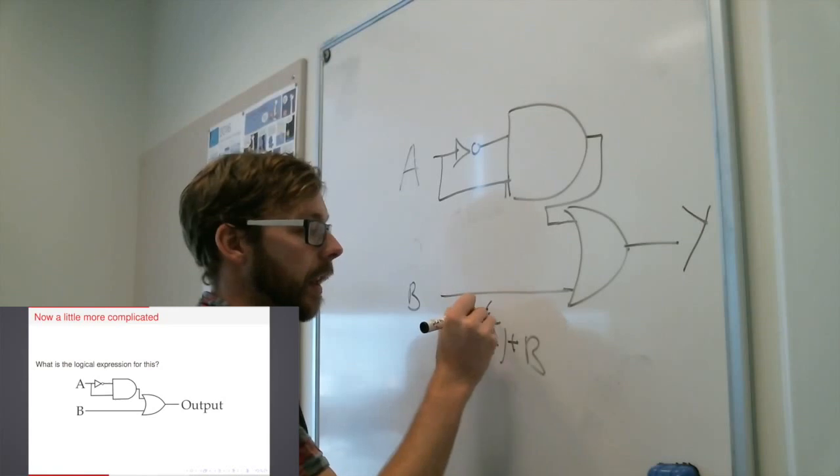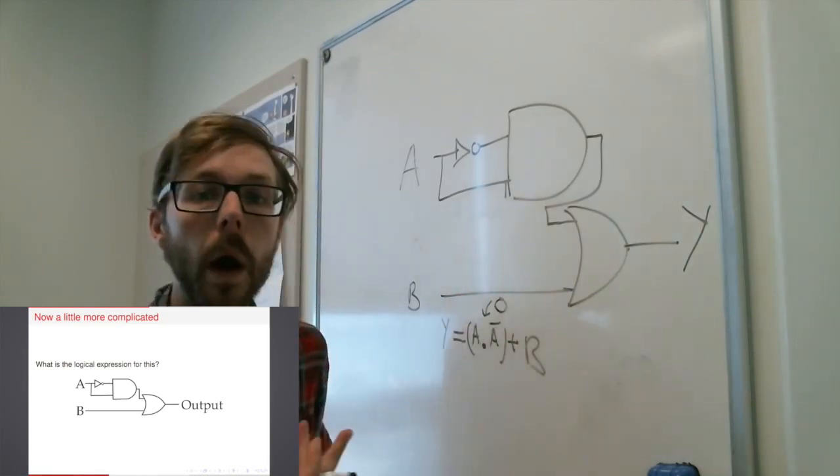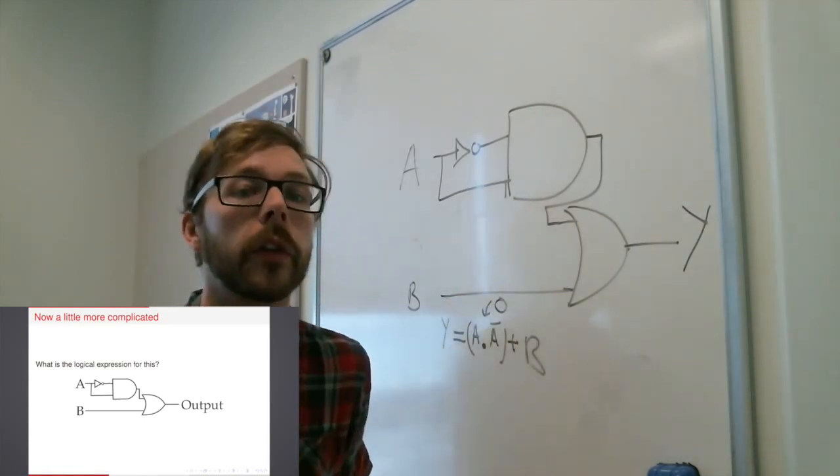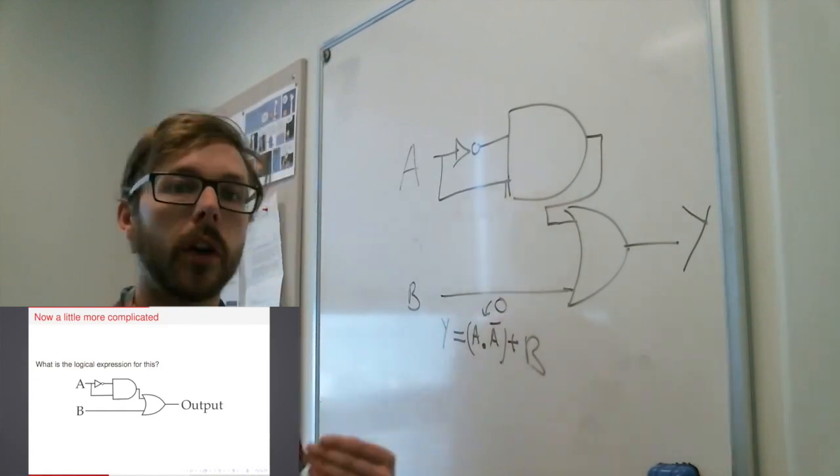That means this thing here, this whole expression is always zero. It's always false, because A cannot be both true and false at the same time.